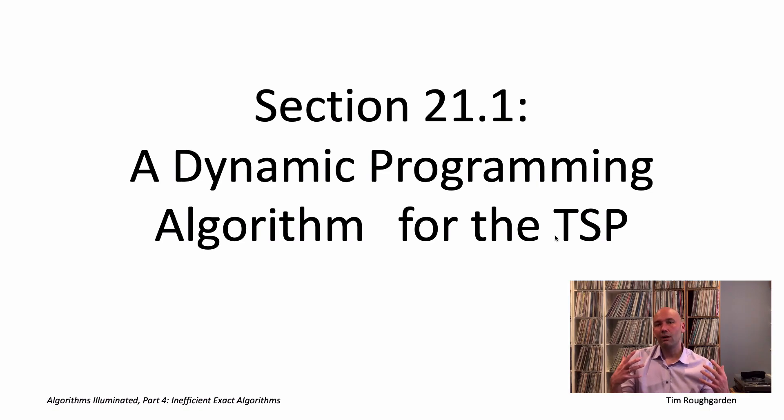Chapter 21 is all about exact inefficient algorithms. As we've seen, unfortunately, you can't have it all with NP-hard problems. When you're unwilling to compromise on correctness, you have no choice but to compromise on speed. The goal is to design exact algorithms that are always correct. If it's an NP-hard problem, we expect it's probably going to run in exponential time, at least in some cases. Our goal as algorithm designers is to come up with something which is certainly better than naive solutions like exhaustive search by as much as possible, as much of the time as possible.